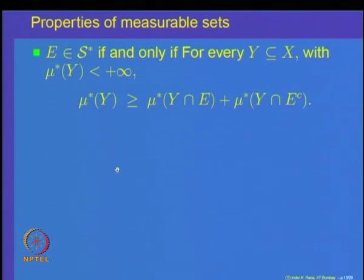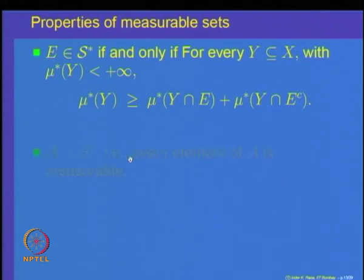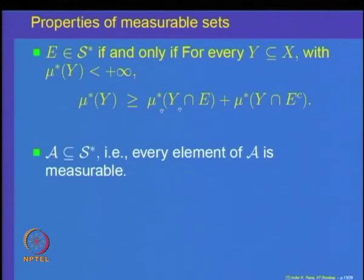We are going to understand the properties of the class S* of all measurable sets. The first observation is that every set in the given algebra is measurable — that is, if A belongs to the algebra A, then this measurability condition is always going to be satisfied.